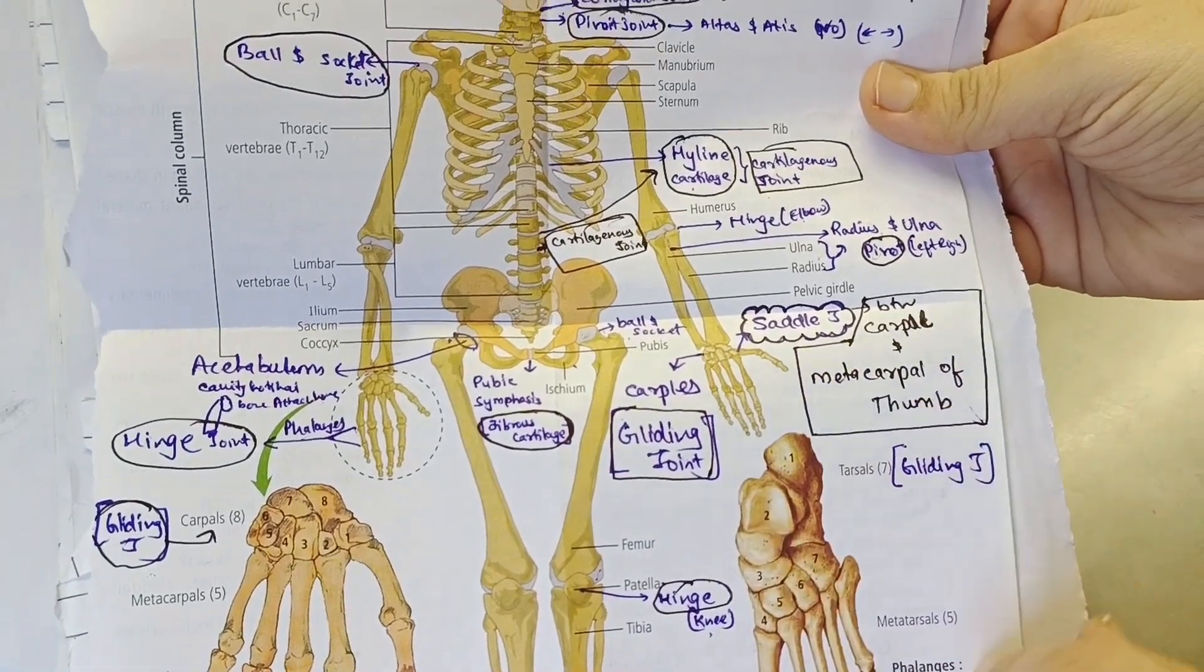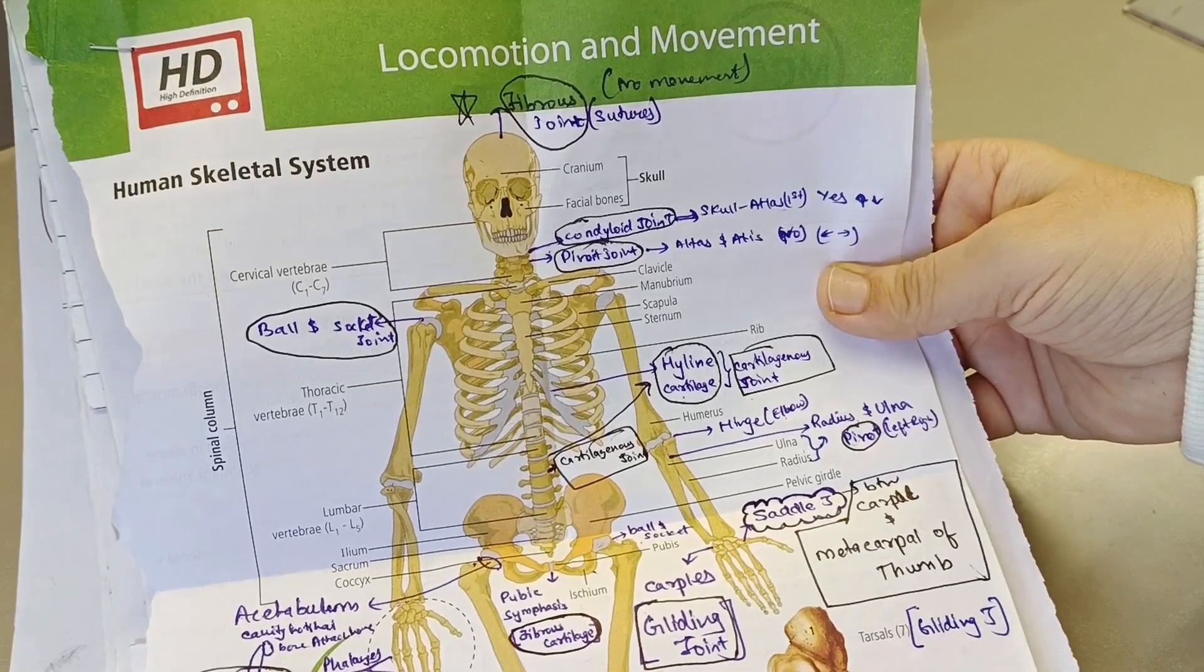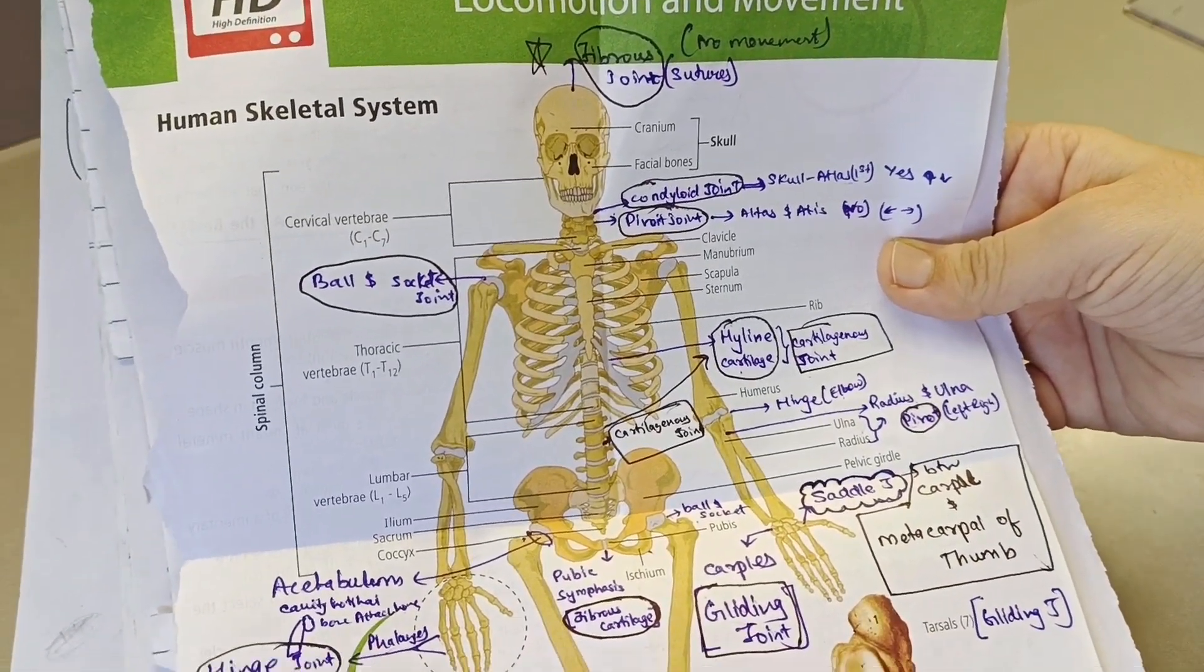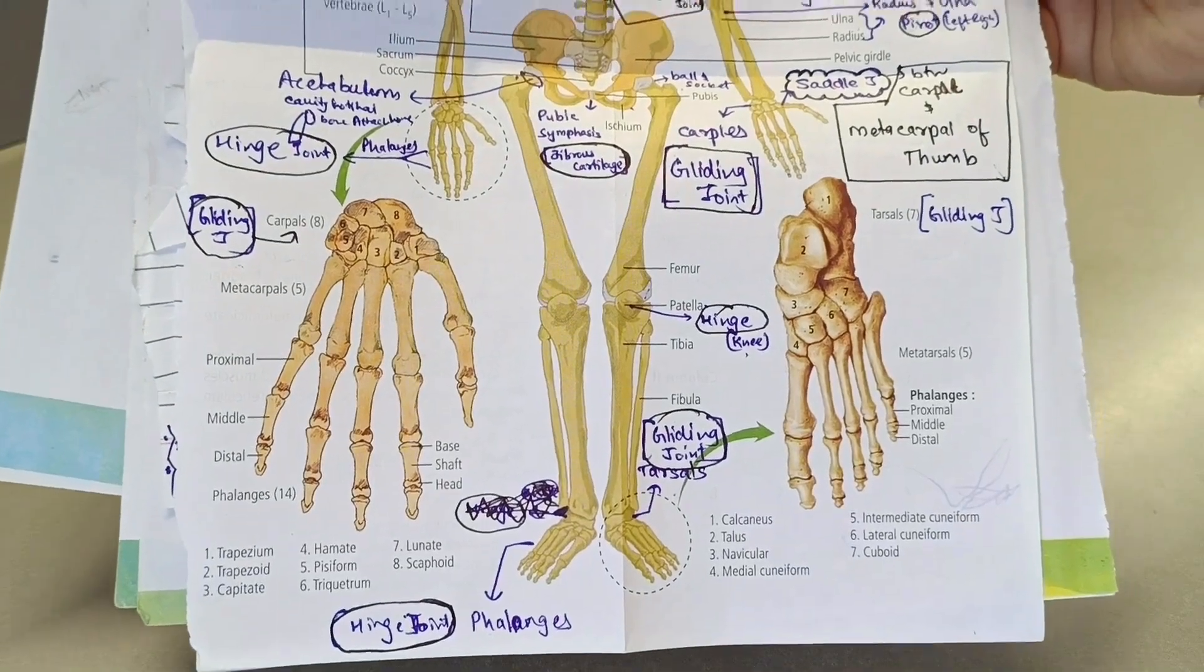So this is what I was talking about. I have pasted an image of human skeletal system in which I have marked all the joints, because I usually forget which joint is present at which location. So by seeing just this one image, I can learn, remember, and recall it very quickly. If you want, you can also do it.